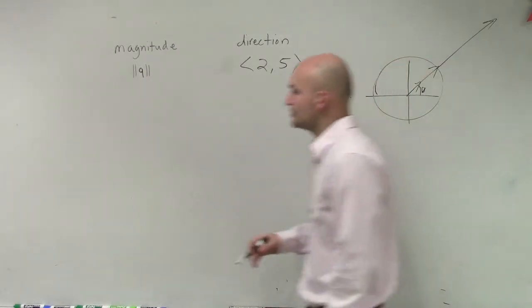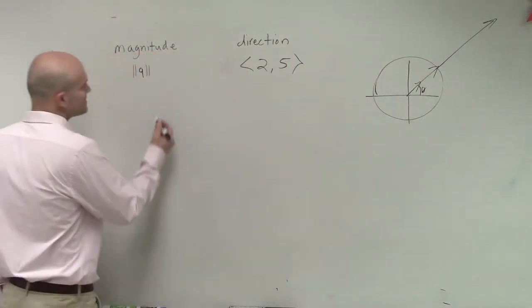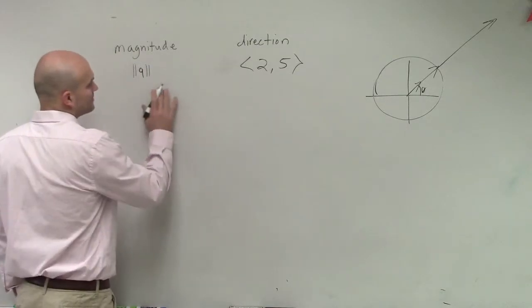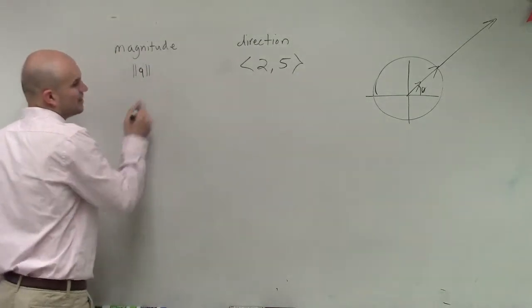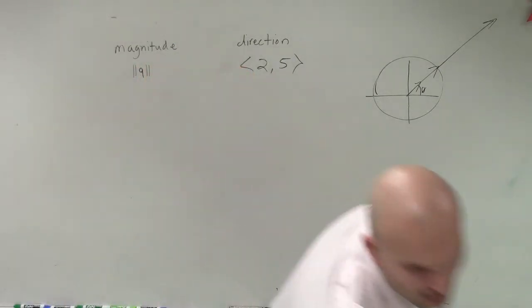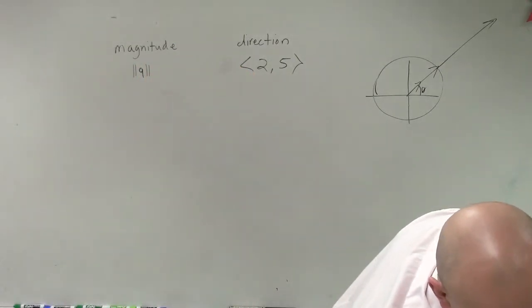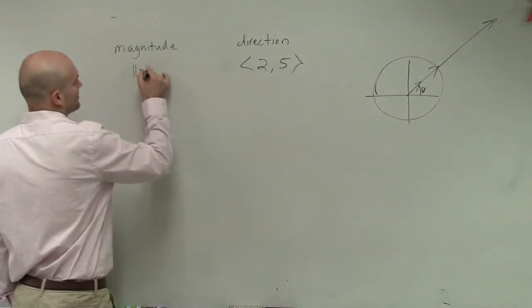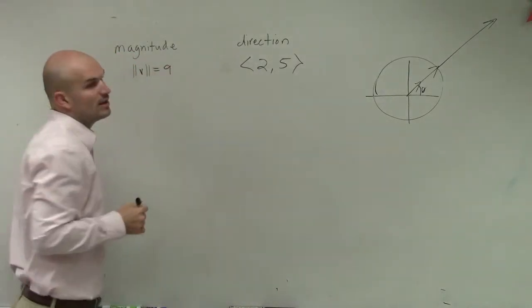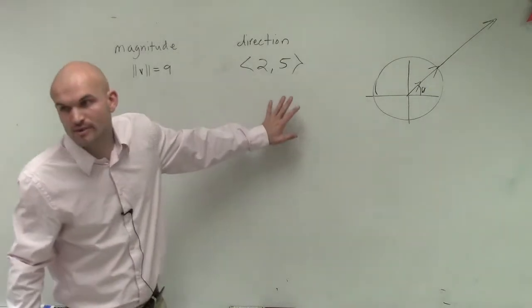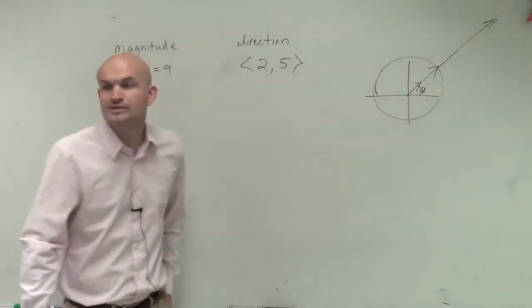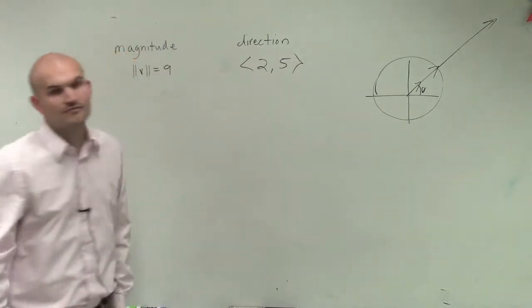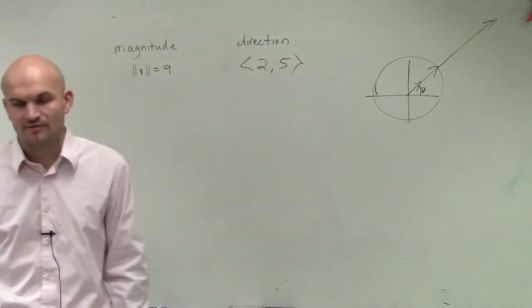So what I'm going to want to do here is I'm going to want to multiply as a magnitude of 9. Magnitude of v equals 9. That's what I didn't write down.